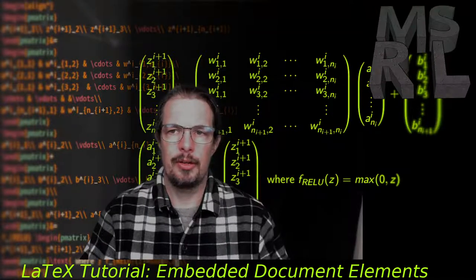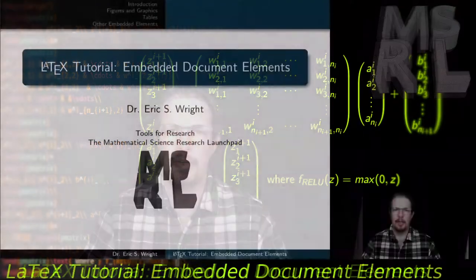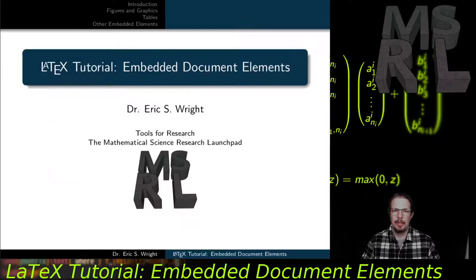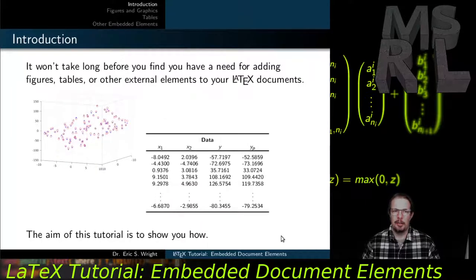Welcome to the third LaTeX tutorial on embedded document elements. Embedded document elements are essentially any kind of feature that you'd see in a LaTeX document that goes beyond the ordinary text structural elements such as sections, titles, subsections, abstracts, and perhaps mathematics. It won't take long before you find that you have a need for adding things like figures, tables, or other external elements to your LaTeX document. So the aim of this tutorial is to show you how to do that.